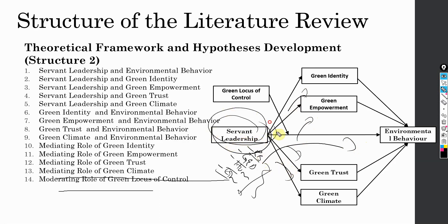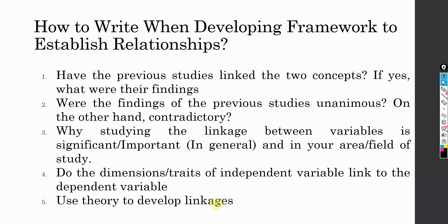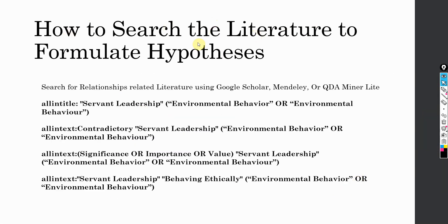This is how you are building an argument that yes, there is a relationship between servant leadership and these variables. Finally, once you are done with all these other elements, the final thing you have to do is use theory to develop linkages. Now that you know these are the critical ingredients when developing a framework to establish relationships, how do you search the literature to formulate these hypotheses?